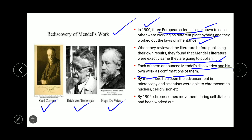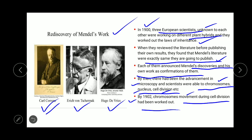By then, with advancement in microscopy, scientists were also able to see chromosomes, the nucleus, and cell division. By 1902, chromosome movement during cell division had been worked out. Scientists gradually started believing in Mendel's results due to the contributions of Carl Correns, Tschermak, and Hugo de Vries — these three scientists are known for rediscovering Mendel's results.